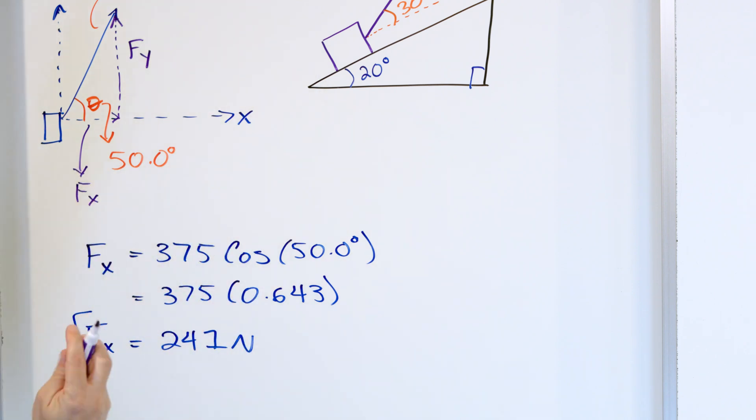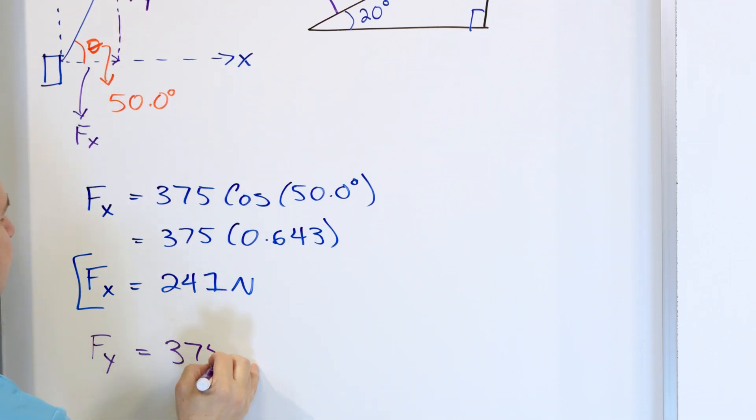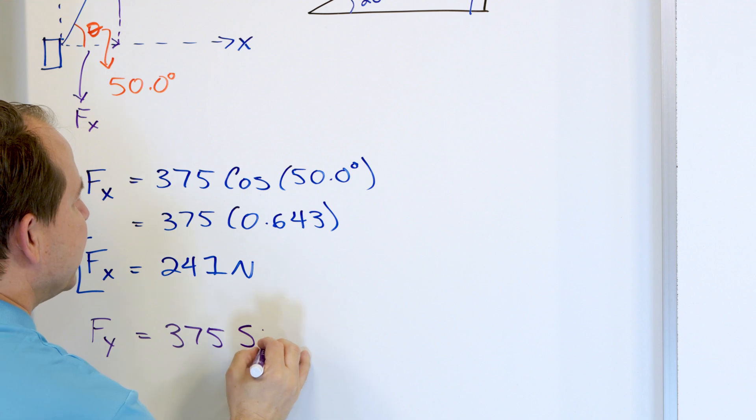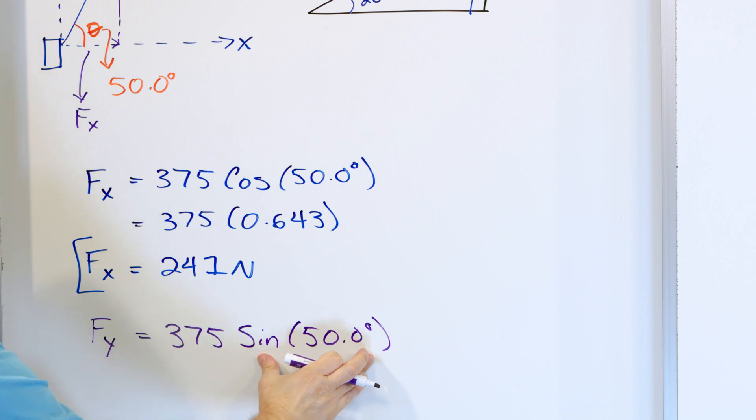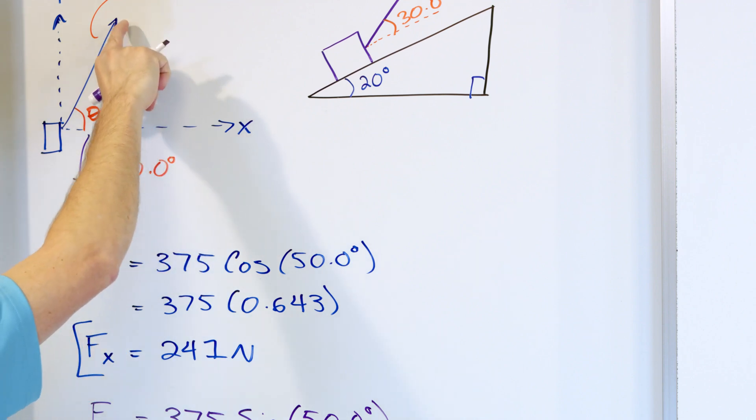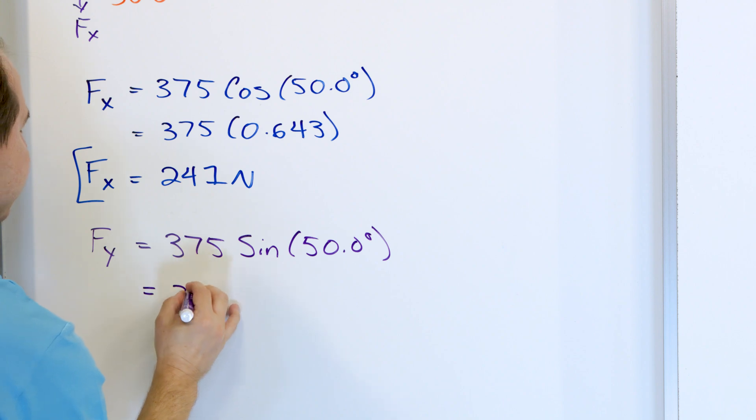Now, how do we find the vertical component F sub Y, which is the length of this triangle, which is acting up right here is going to be equal to the total force 375, but not times the cosine, because now we're trying to project and get the vertical side. So it's times the sine of the same angle, 50.0 degrees. And this is the same thing as saying the sine of this angle is the opposite side divided by the hypotenuse. If you were to divide it over, sine of this angle is the opposite side divided by the hypotenuse. So it's the same exact relation. And then 375.